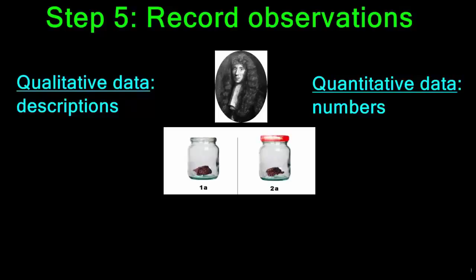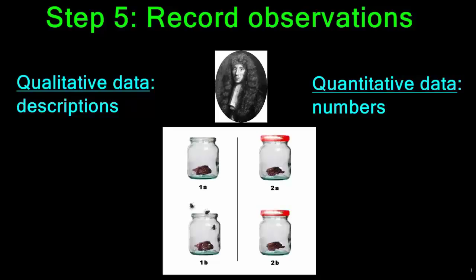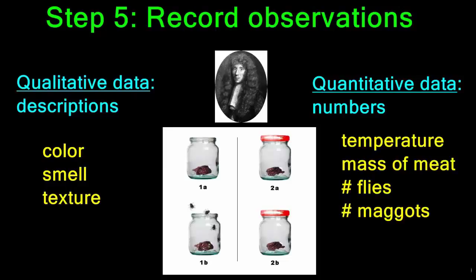In the case of Redi's experiment with the two jars, some qualitative data could include the color of the meat, the smell of the meat, or the texture of the meat — all descriptions using words. For quantitative data, he could use a thermometer to measure the temperature inside the jar, a balance to measure the mass of the meat, or he could count the number of flies or the number of maggots. All of this information recorded as numbers is considered quantitative data.